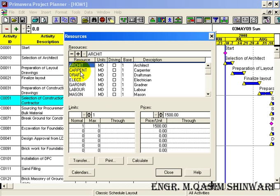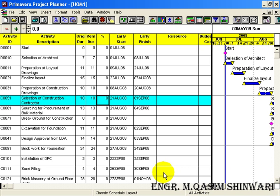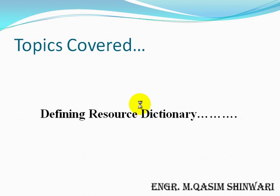For Carpenter we have normally 3 and maximum 6, with a unit price of 600, and so on. In this tutorial we have defined the resource dictionary — we added different resources, their descriptions, the normal limit and maximum limit of each resource, and their prices per unit. This is the end of Tutorial 11. See you in the next tutorial. Allah Hafiz.